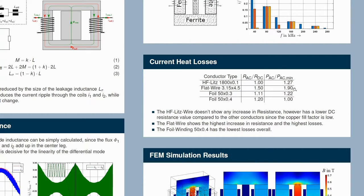The foil conductors have medium skin proximity losses, but they have a lower DC resistance value compared to the high frequency Litz wire, since the copper fill factor is lower for the high frequency Litz wire.